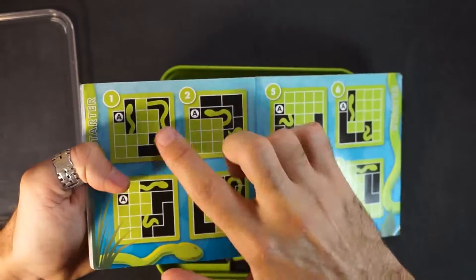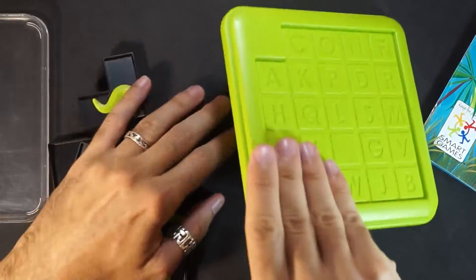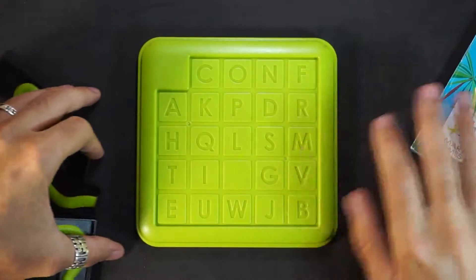What's the game about? Let's see the first challenge. First take all the game pieces and flip the green lid over so it shows the letters facing up.